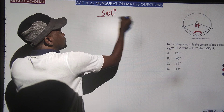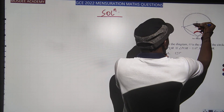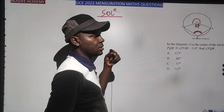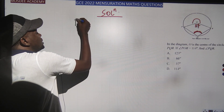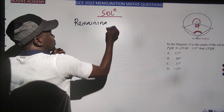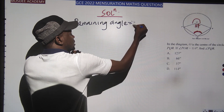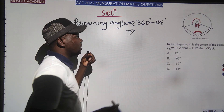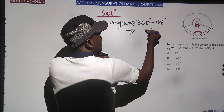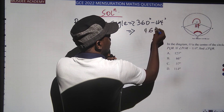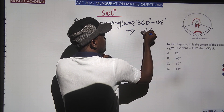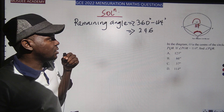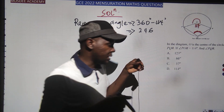From the solution, we need the remaining angle. The remaining angle will be 360 minus 114. Working it out: 10 minus 4 is 6, 5 minus 1 is 4, 3 minus 1 is 2 — so that gives 246°. That is the reflex angle at the center.